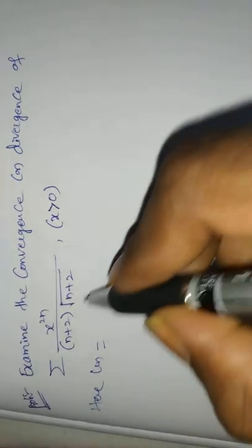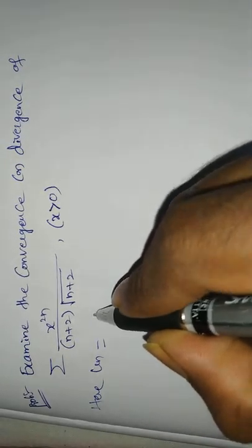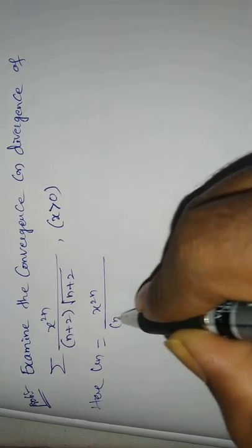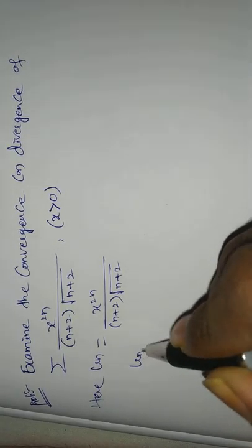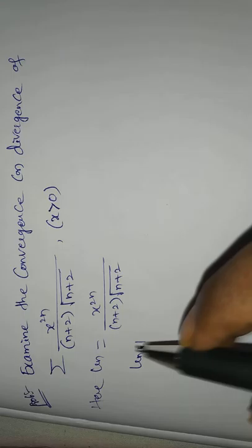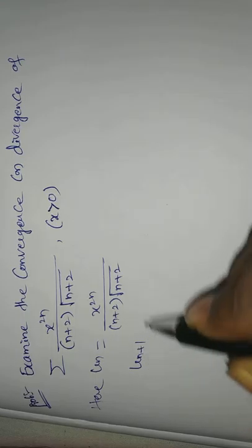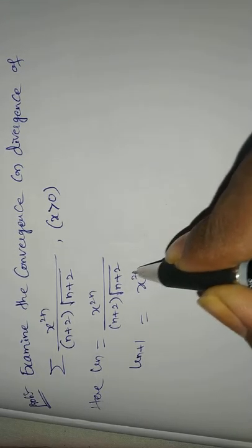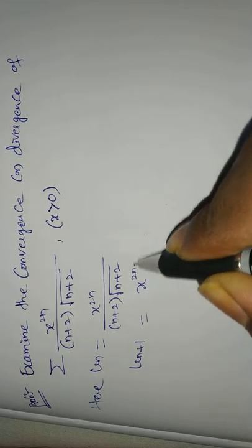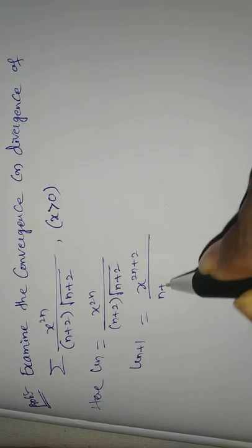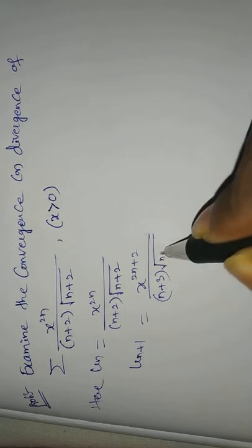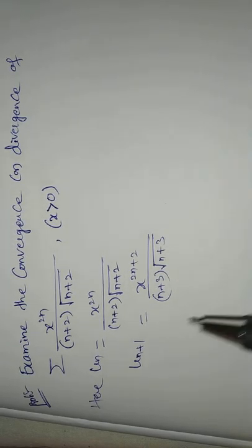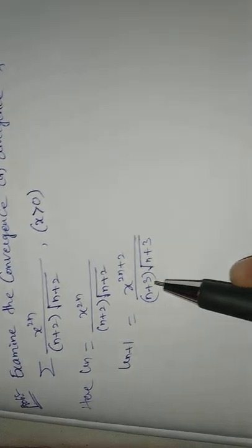Solution: Here U_n equals x^(2n) divided by (n+2) times the root of (n+2). Then U_{n+1} equals x^(2n+2) divided by (n+3) times the root of (n+3), replacing n with n+1 throughout.